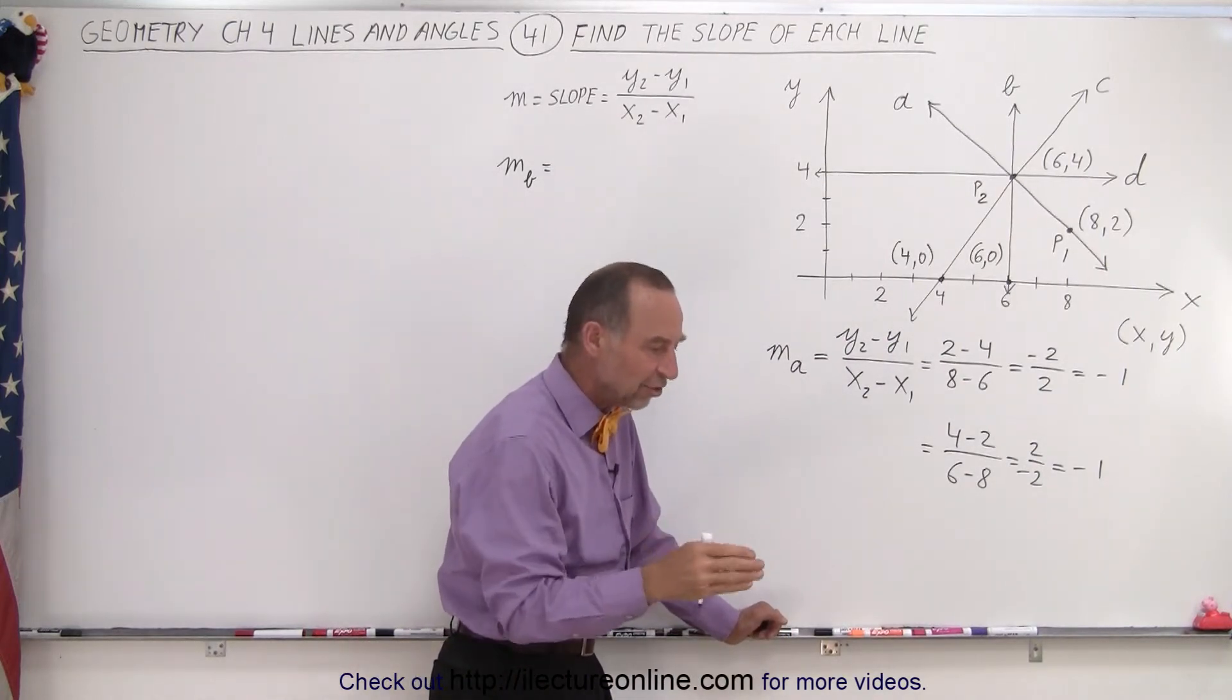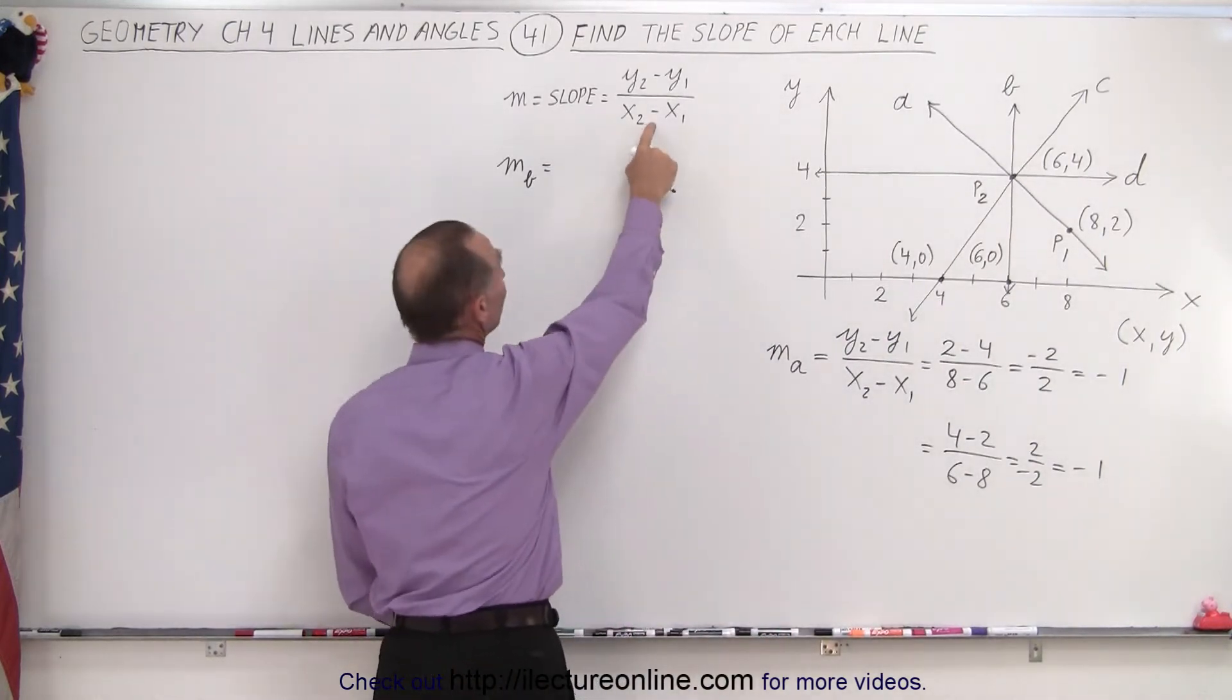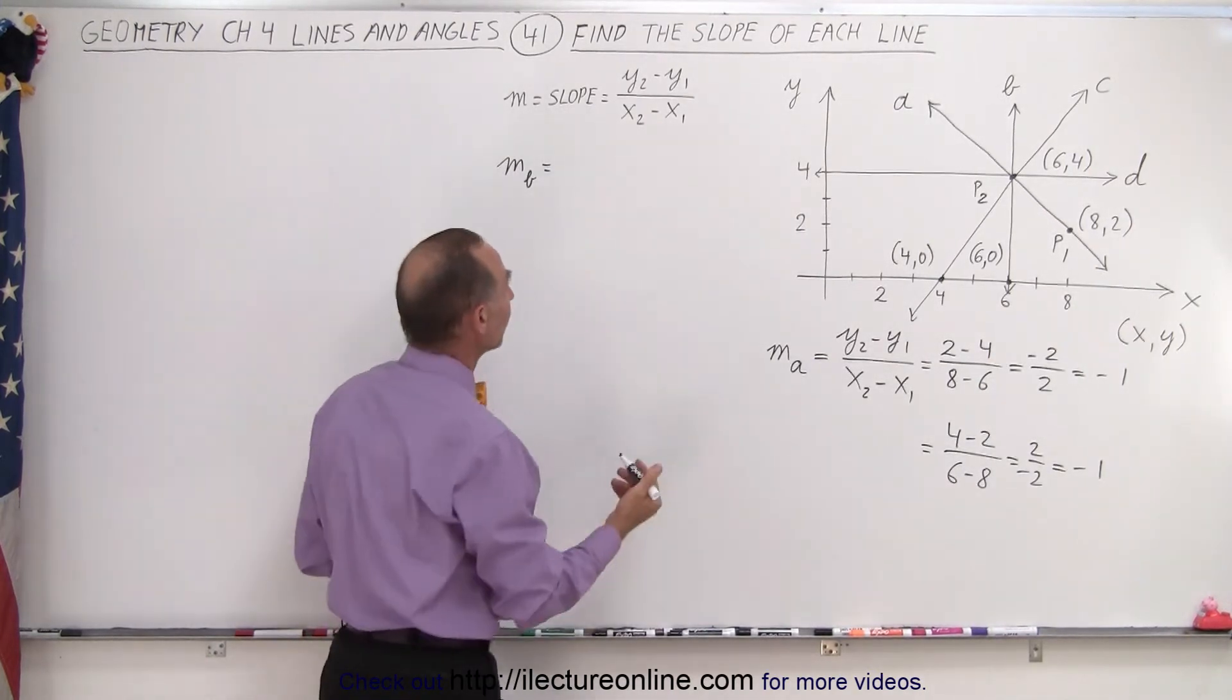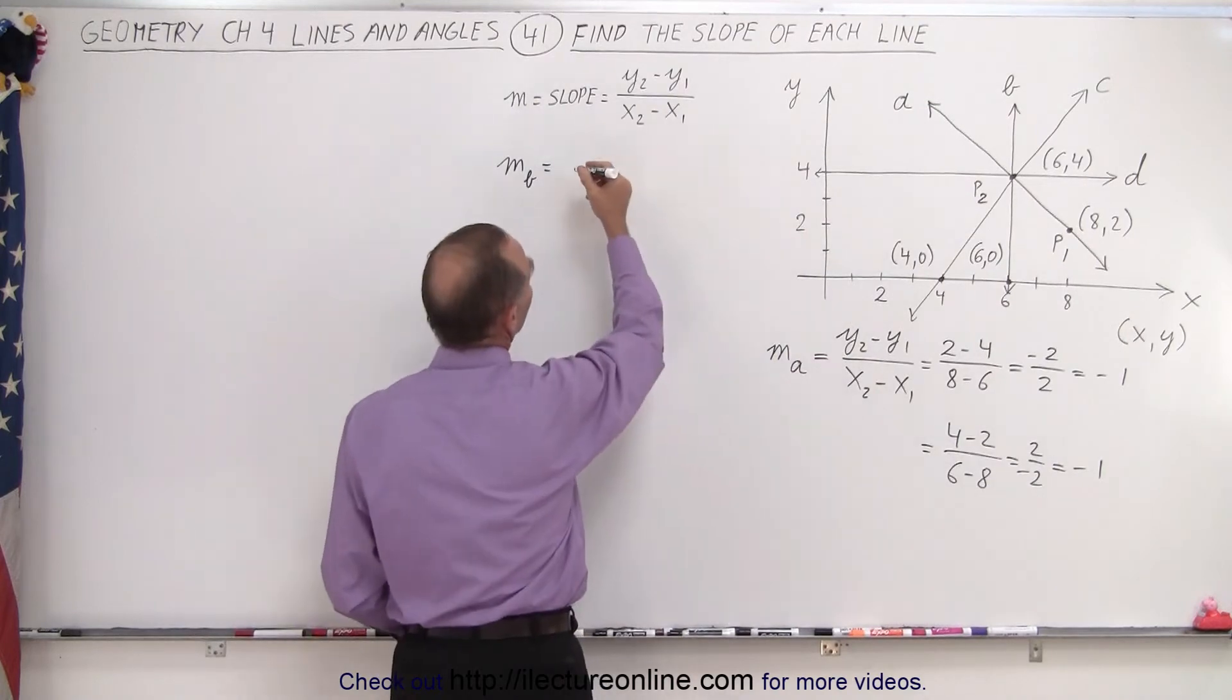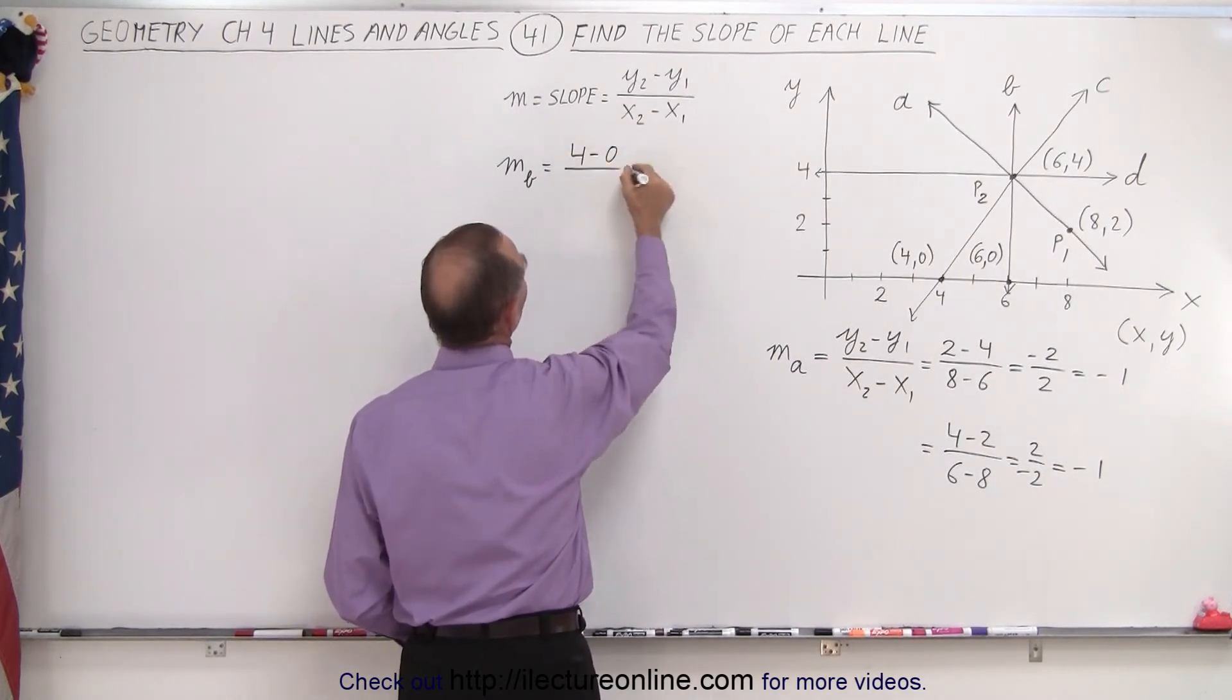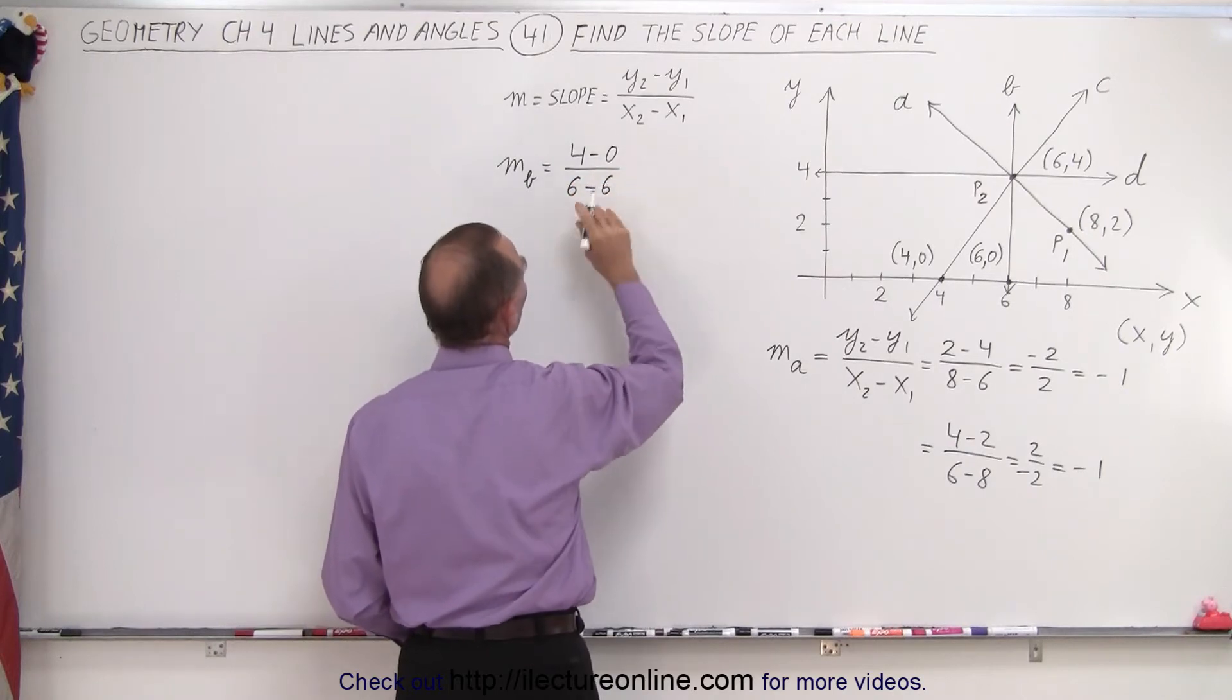So if there's no change in the x direction, that means the denominator is going to be zero, which means you end up at an undefined slope. So in this case, I'll take 4 minus 0 for the change in y divided by 6 minus 6 for the change in x.